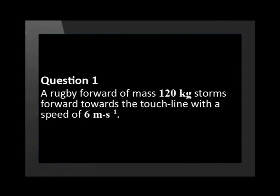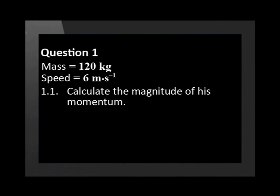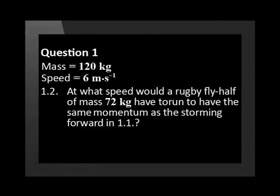A rugby forward of mass 120 kg storms forward towards the touchline with a speed of 6 m per second. Calculate the magnitude of his momentum. At what speed would a rugby fly-half of mass 72 kg have to run to have the same momentum as the storming forward in 1.1?